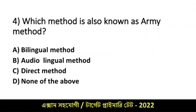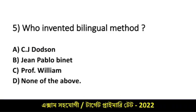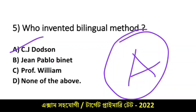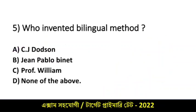Who invented the Bilingual method? Options are: C.J. Dodson, G. Pablo Binet, Professor William, and none of the above. The person who invented the Bilingual method is C.J. Dodson. Option A is the right answer.